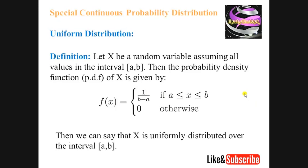First of all, we introduce the uniform continuous probability distribution. Let x be a random variable assuming all values in the closed interval [a, b]. Then the probability density function (PDF) of x is given by f(x) = 1 over (b minus a), where x is between a and b. This is called the PDF of the uniform distribution, and we say that x is uniformly distributed over the interval [a, b].